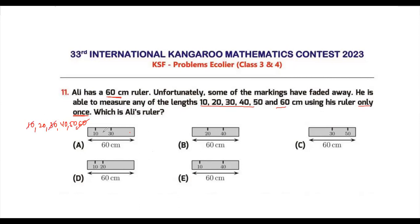Now if I want to measure 20, I can do this because 30 minus 10 is 20. So if I keep this particular measurement, I'll be able to measure 20. Now I can measure 50 because this whole thing is 60 and this is 10. So if I have a line of 50 centimeters, I'll keep the ruler like this: this will be 60 and this will be 10, something like this. So I'll be able to measure 50.